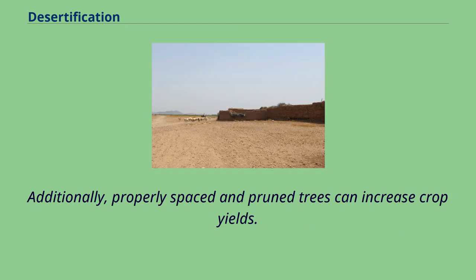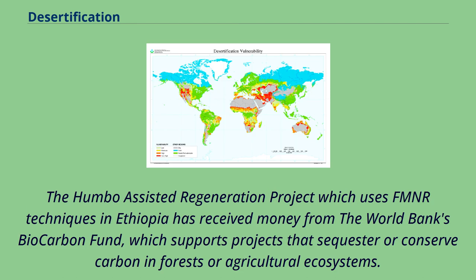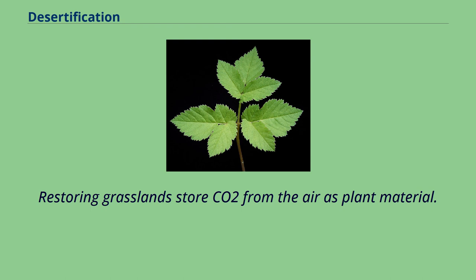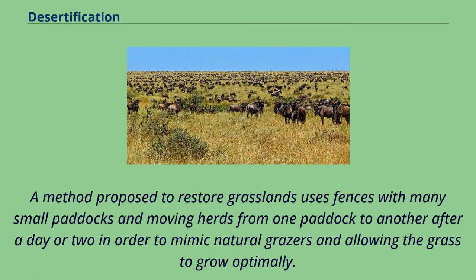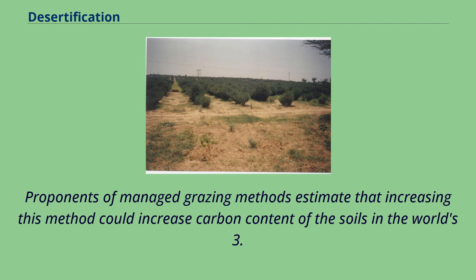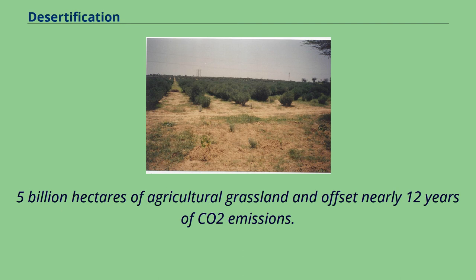Additionally, properly spaced and pruned trees can increase crop yields. The Humbo-assisted regeneration project, which uses farmer-managed natural regeneration techniques in Ethiopia, has received money from the World Bank's Biocarbon Fund, which supports projects that sequester or conserve carbon in forests or agricultural ecosystems. Restoring grasslands stores CO2 from the air as plant material. A method proposed to restore grasslands uses fences with many small paddocks, moving herds from one paddock to another after a day or two in order to mimic natural grazers and allow the grass to grow optimally. Proponents estimate that increasing this method could increase the carbon content of soils in the world's 3.5 billion hectares of agricultural grassland and offset nearly 12 years of CO2 emissions.